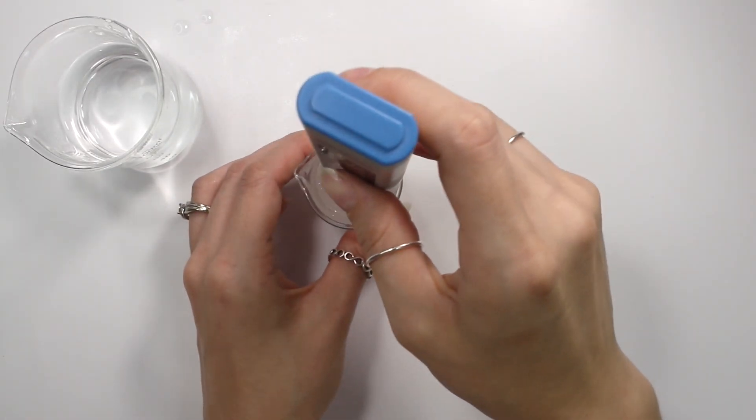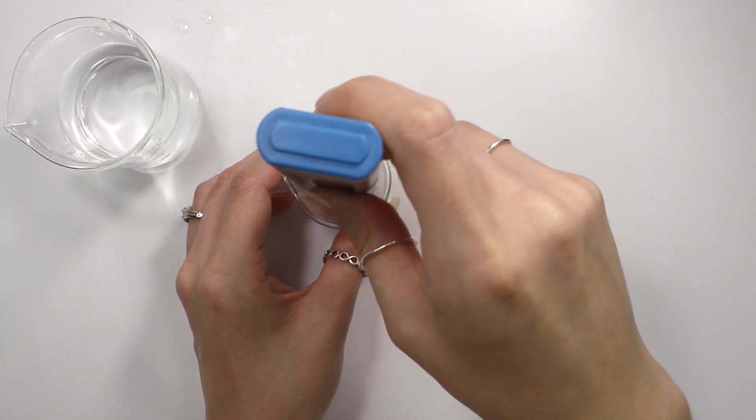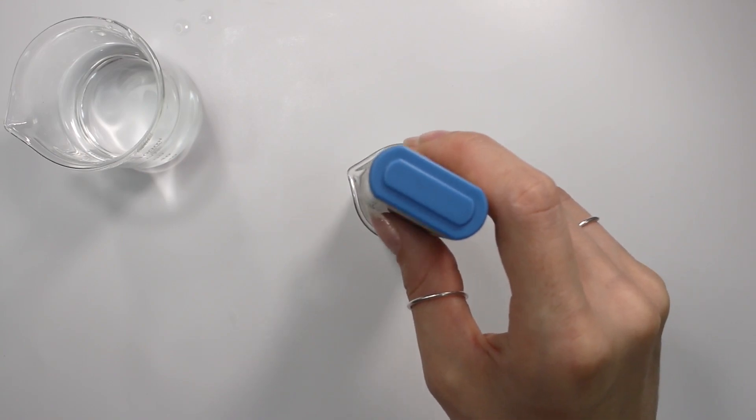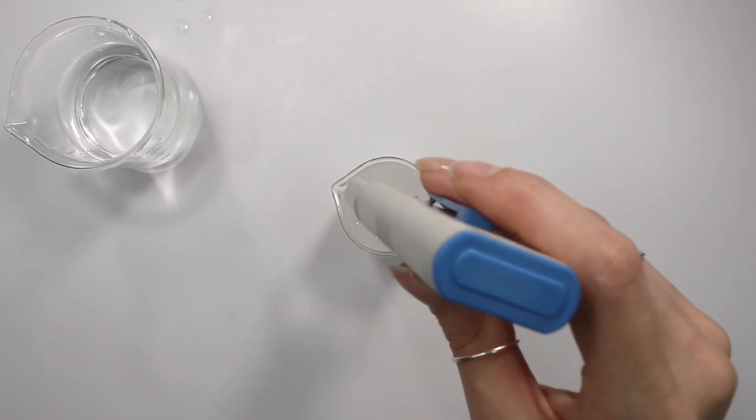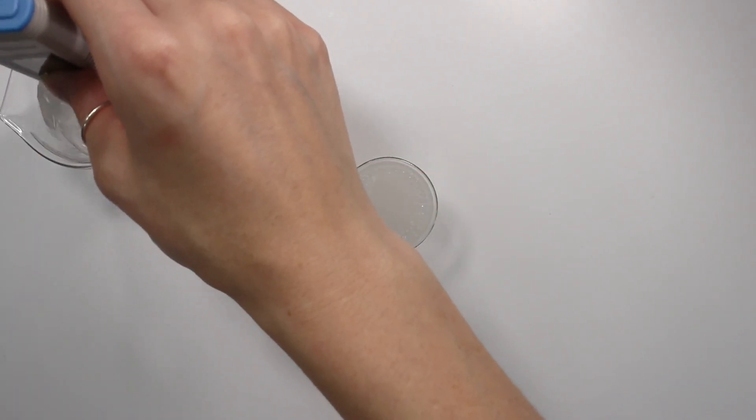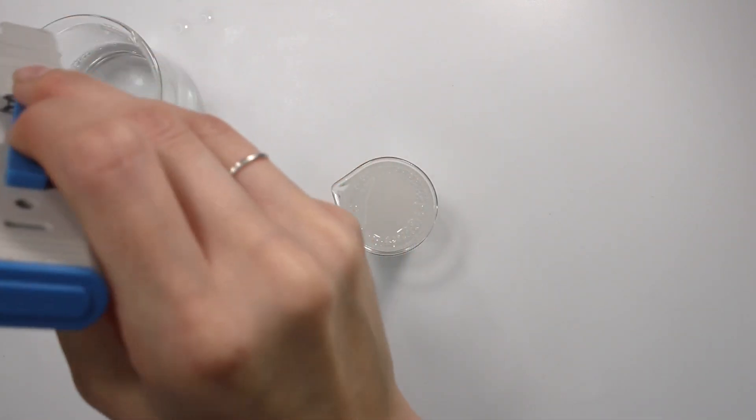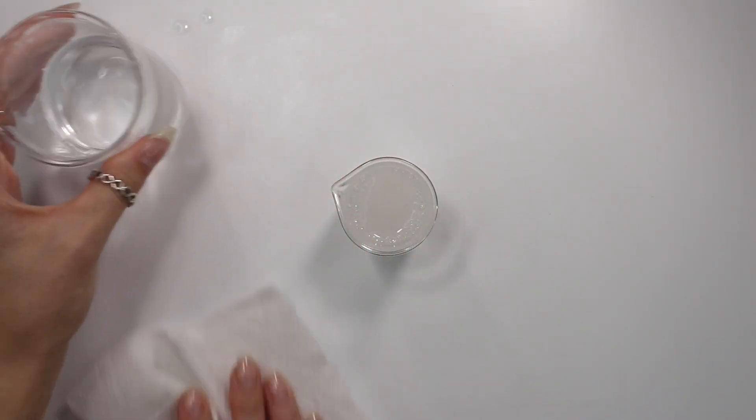So let's take the pH with the cheaper pH meter. Again, dip it in your distilled water and then swish it around in the solution for about a minute. And this one is reading 7.17. So again, off by about 0.20. So we can totally say now that this cheaper pH meter is off by 0.20 compared to the more expensive pH meter.